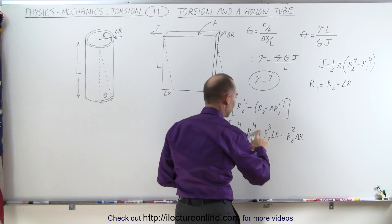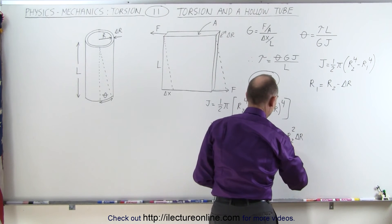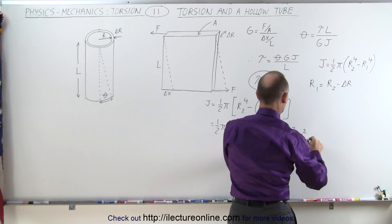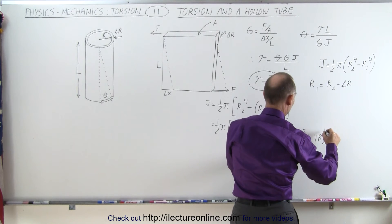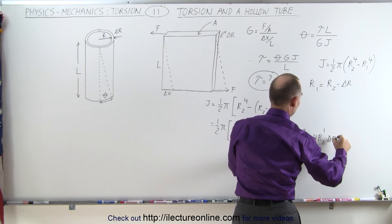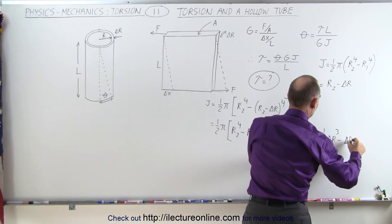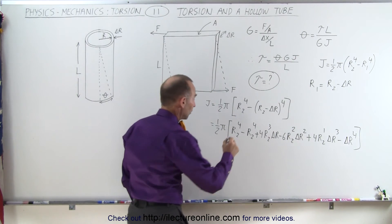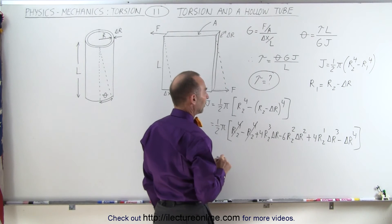Oh, and I forgot my constants here. That will be plus 4, and this will be minus 6 times that squared. And that will be plus 4 times r to the first power times delta r to the third power, and finally minus delta r to the fourth power. Now when we simplify that, notice we have an r₂ to the fourth power minus r₂ to the fourth power.